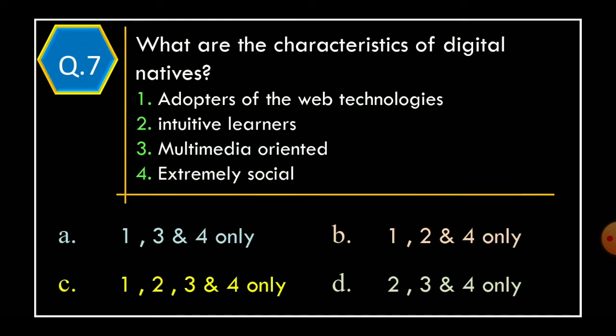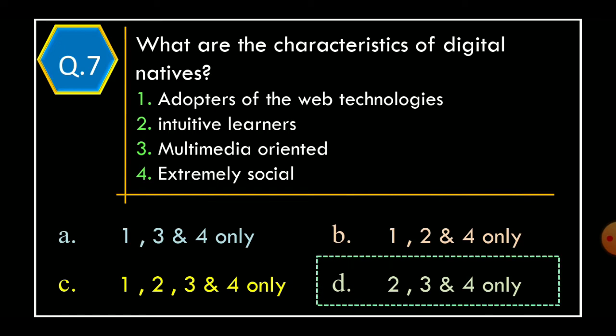Question 7: What are the characteristics of digital natives? Statement 1: Adopters of web technologies. Statement 2: Intuitive learners. Statement 3: Multimedia oriented. Statement 4: Extremely social. Choose the correct option. Option A: Statements 1, 3, 4 only. Option B: Statements 1, 2, 4 only. Option C: Statements 1, 2, 3, and 4 only. Option D: Statements 2, 3, 4 only. The correct option is Option D: Statements 2, 3, and 4 only.